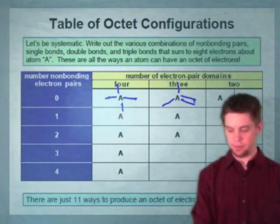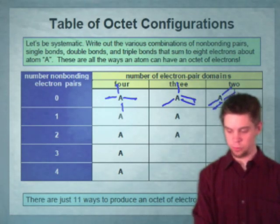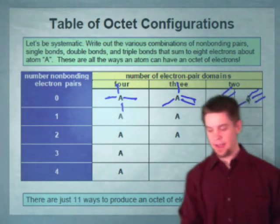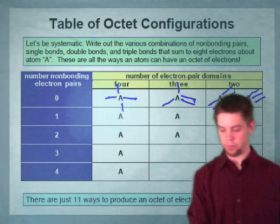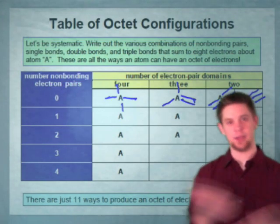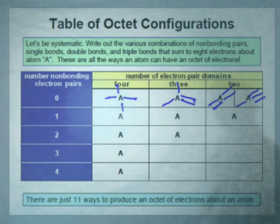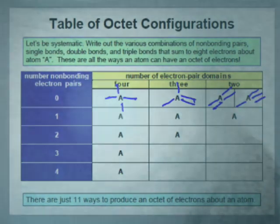With two electron pair domains and no lone pairs, we would have either two double bonds, or a triple bond and a single bond. You can begin to see here how this represents two electron pair domains, with no lone pairs, which is why it's in the first row of the table of octet configurations.